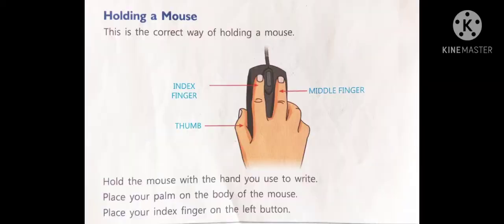Now, holding a mouse. This is the correct way of holding a mouse. You can see the picture. Hold the mouse with the hand you used to write. Place your palm on the body of the mouse. Press your index finger on the left button.